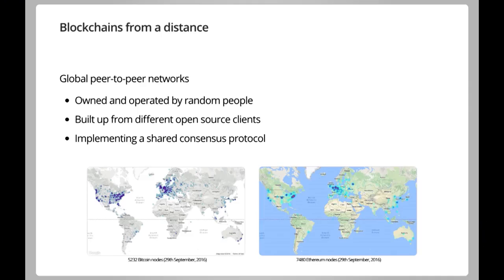Before diving in, it's important to know the context of my talk, where I'm coming from. I'm not sure how many of you have heard about blockchains before, but probably most of you have. If you look at blockchains from the outside, it's kind of like a peer-to-peer network — owned and operated by average people, similar to BitTorrent or Skype. Looking at the two images I linked below, the leftmost is the Bitcoin network, the rightmost is the Ethereum network. It looks like any distributed network, so what's so special about it?